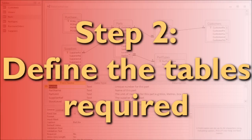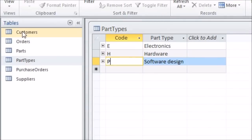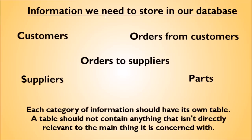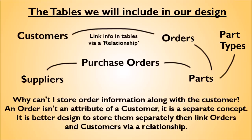Step two: define the tables required. Information in a database is held in tables. By this point you should have some idea of the information the database needs to hold to achieve your goals. You need to categorize this information into a set of tables. To start with, you don't even need to do this in Access — just make a list by hand or in another program. Each table should deal with information related to just one area or subject. The tables within our example database are: parts, customers, orders, part types, purchase orders, and suppliers.